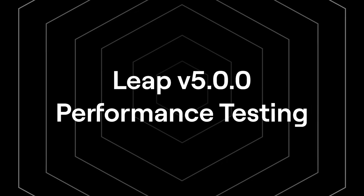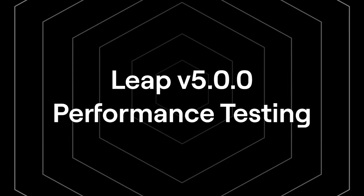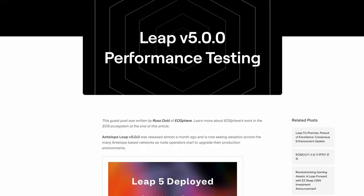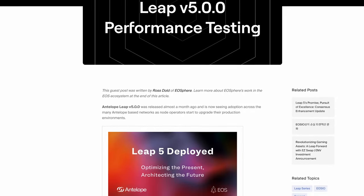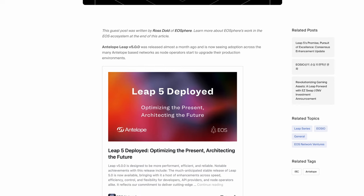I was actually one of the reviewers on this for the grant and had the chance to play around with it — it's very cool and I can immediately see how it will be used by node operators in general. On CPU, memory, and disk performance, there was a great article written by Ross from EOSphere about improvements in LEAP 5.0, with real-life data taken from their own nodes. It's a good way to understand some of the larger picture of what block producers have to go through.